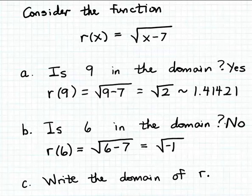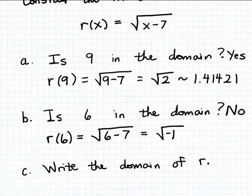And that means we don't have a meaningful output value, or 6 is not in the domain of the function. Okay, so now let's tackle the final question here: What is then the domain of the function r? We know 9 is in the domain, we know 6 is not in the domain, so what would be the entire domain of the function r?